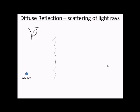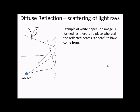If the object is not smooth, we get something called diffuse reflection. Still, the angle of reflection equals the angle of incidence. However, because the angle of incidence is constantly changing, so is the angle of reflection. This is why we only really see reflections in plain mirrors, because the reflected beams do not appear to come from the same place.